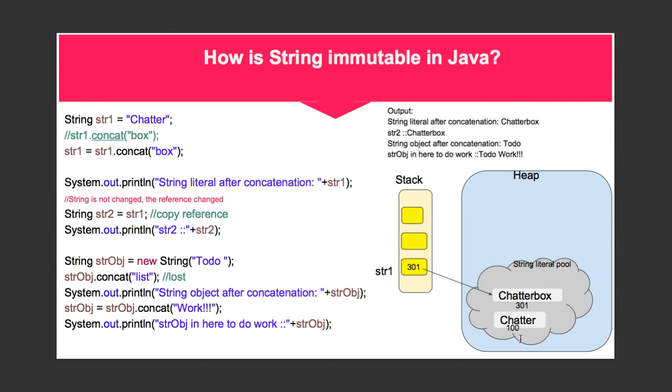So when we try to print the updated string, we get Chatterbox. So you will think that the object itself was updated. However, actually the object was not updated. It was only that the reference was updated. Now you are referring to another object called Chatterbox which you created through concatenation.